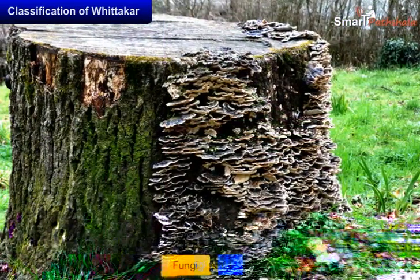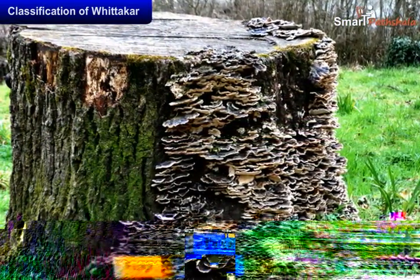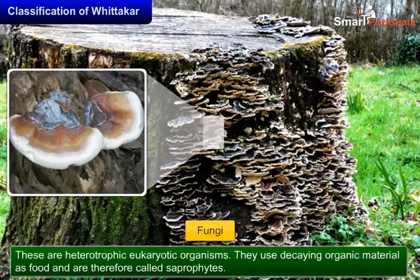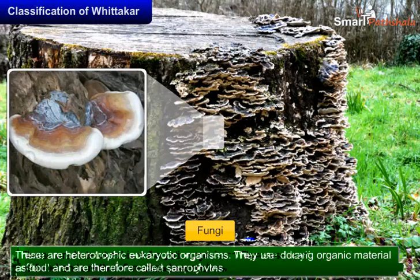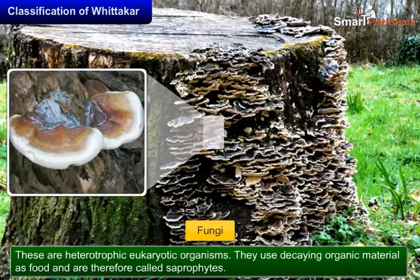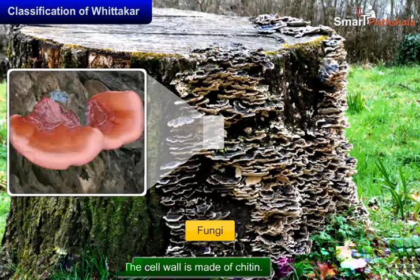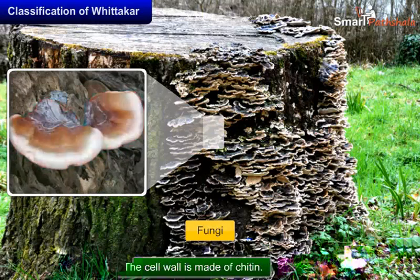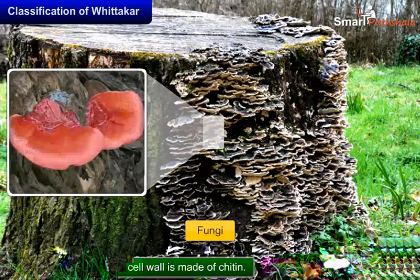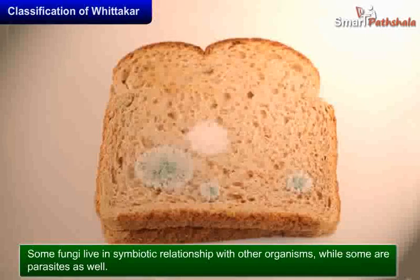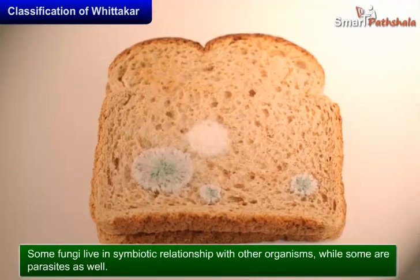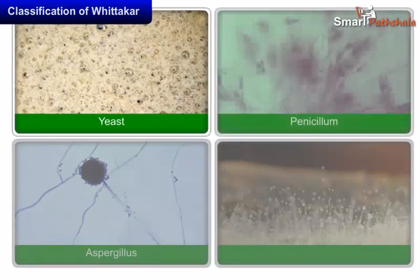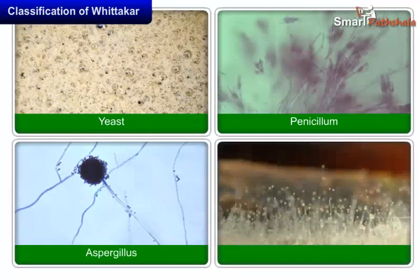3. Fungi. These are heterotrophic eukaryotic organisms. They use decaying organic material as food and are therefore called saprophytes. The cell wall is made of chitin. Most of the fungi are unicellular, but many have the capacity to become multicellular at certain stages in life. Some fungi live in a symbiotic relationship with other organisms, while some are parasites as well. Examples: Yeast, Penicillium, Aspergillus, Mucor, etc.